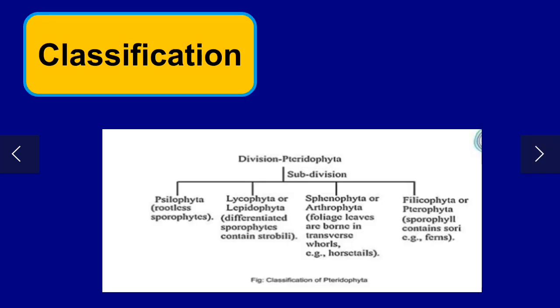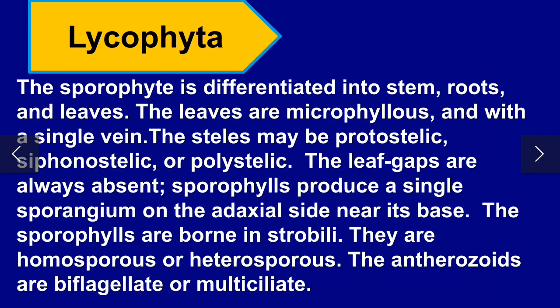Classification of Tracheophyta — there are four subphyla. Number one: Lycophyta. Its sporophytic body is differentiated into root, stem, and leaves. They may contain microphyllous leaves with single veins. Their stele may be protostelic, siphonostelic, or polystelic. Leaf gaps are always absent. Each sporophyll produces a single sporangium, and sporophylls are borne in strobili. They may be homosporous or heterosporous. Their antherozoids are biflagellate or multiflagellate.